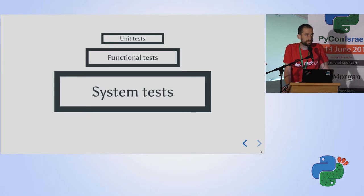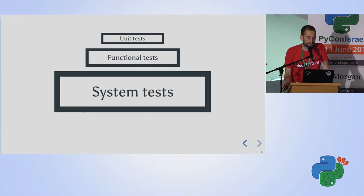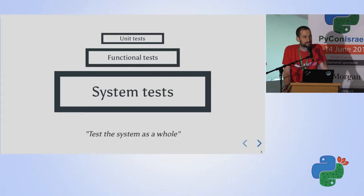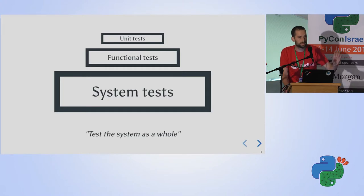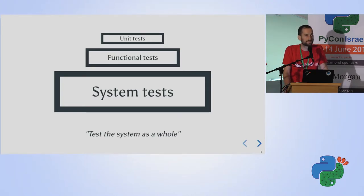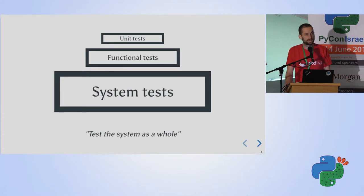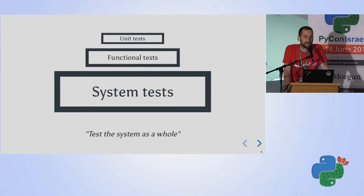That brings us to system testing. I tried to find a strict definition, but the best I found is 'test the system as a whole.' In our eyes, when doing system tests you're supposed to mimic the exact behavior your user will perform — if you have an installation guide on GitHub saying 'install my application this way,' that's what you're supposed to do in system testing. This shows the difference from functional and unit testing: in system testing you might need to install all supported databases, even different versions of them, to actually test your application.